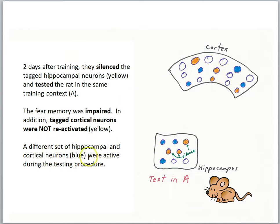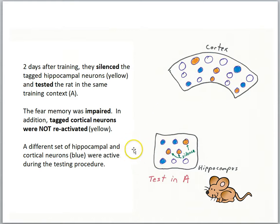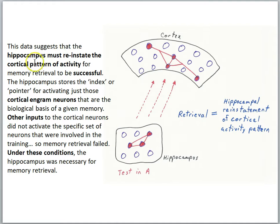A different set of hippocampal and cortical neurons were active during the testing procedure. We would normally think that if the animal is going to retrieve a memory, the same cells active during learning would be reactivated during retrieval. But by blocking activity in the hippocampal engram cells, that seemed to cause a lack of activity in the cortical cells, and a different population became active. They were able to impair the memory simply by blocking hippocampal cell activity, and so memory retrieval failed.